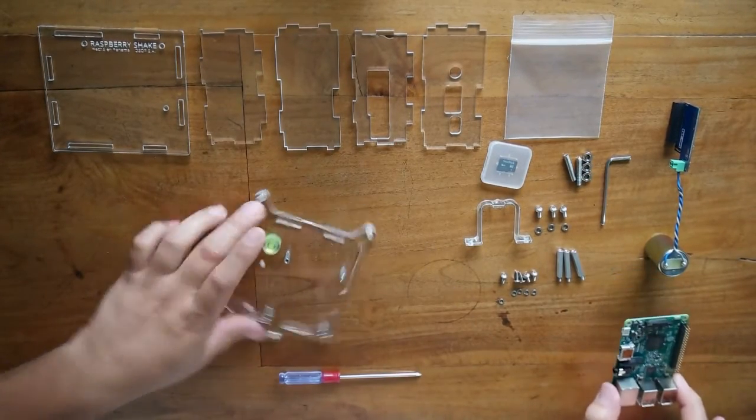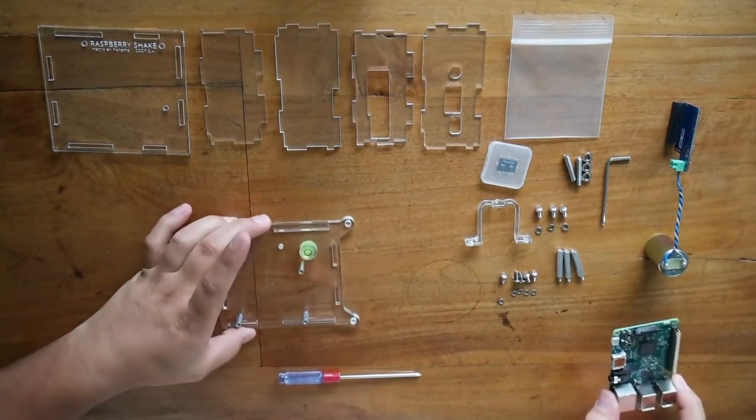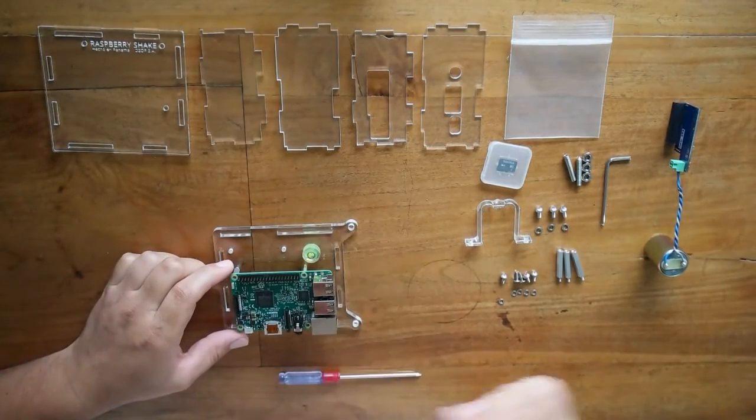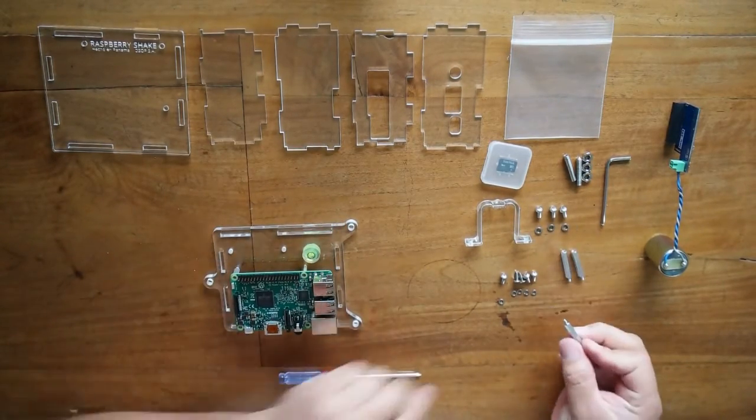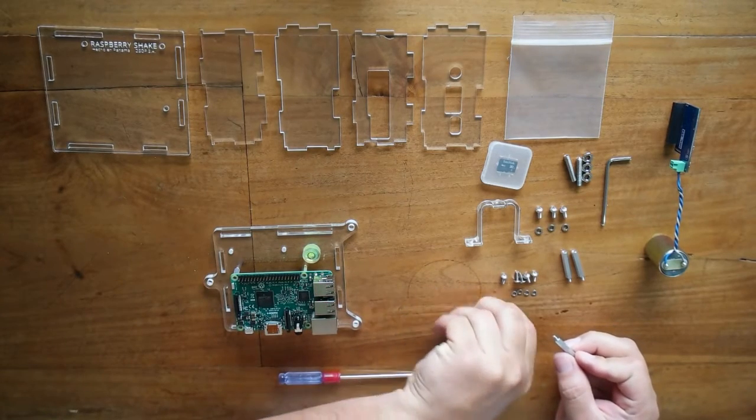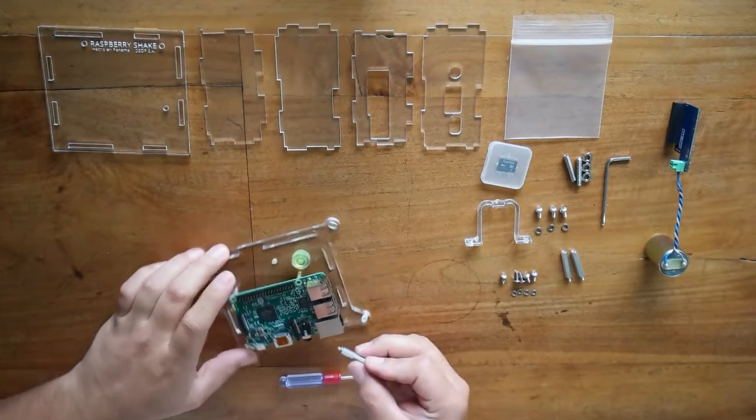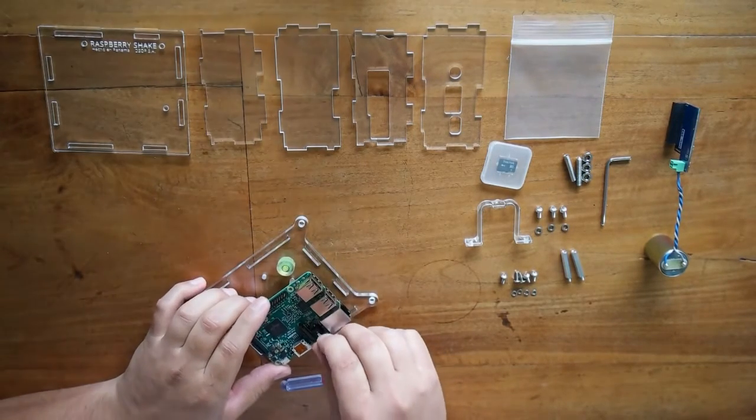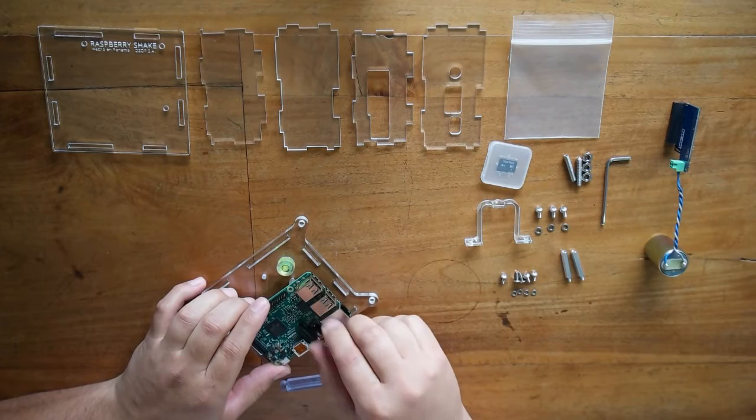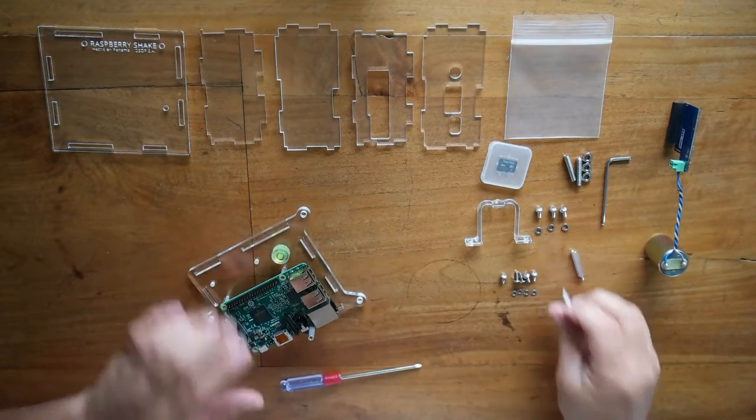Take the Raspberry Pi and place it in the positions as you are seeing in this video. The Pi header side should be just below the bubble. Now take one of the short standoffs as well as one washer type 2, tighten the washer type 2 into the short standoff, and screw it into one of the circle holes on the Pi. Do this two times more.